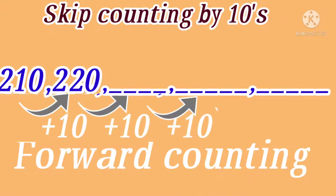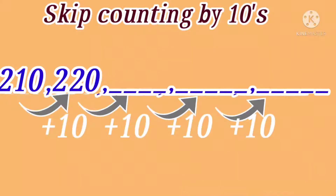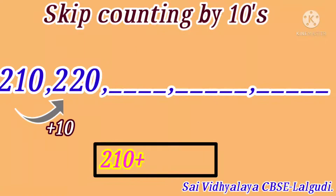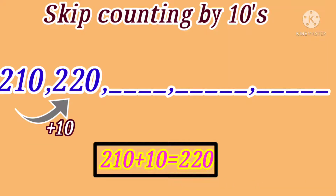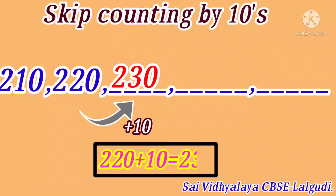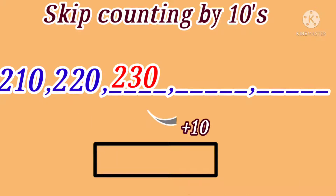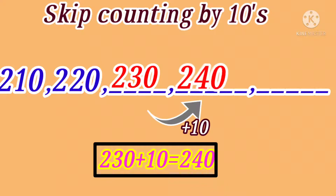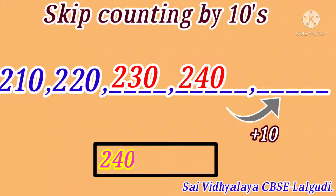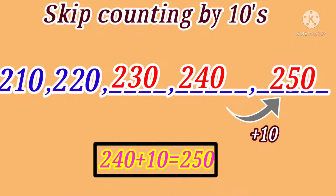we have to add number 10 repeatedly to get the next number. 210 plus 10 is equal to 220. 220 plus 10 is equal to 230. 230 plus 10 is equal to 240. 240 plus 10 is equal to 250.